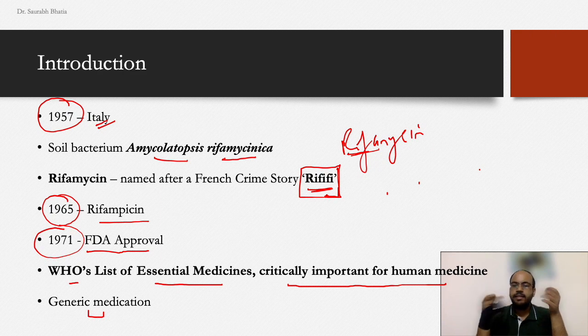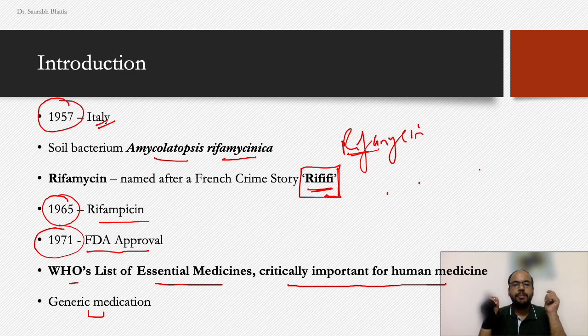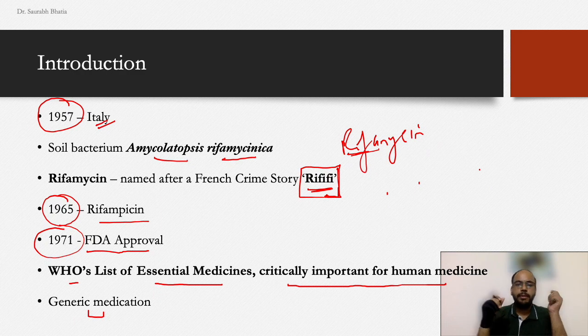Rifampicin is available as a generic medication in many countries, even freely supplied by WHO in blister packs for MDT therapy in leprosy outpatient departments. It is part of essential medications and critically important medication for the human population.